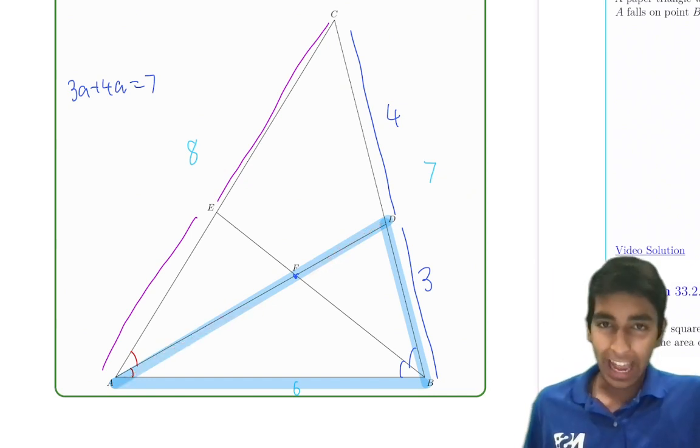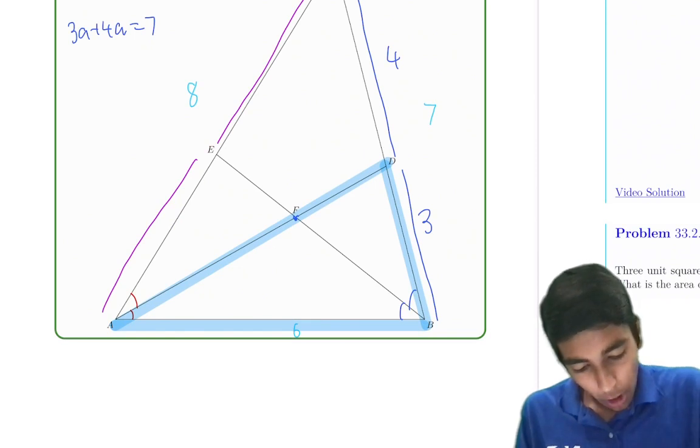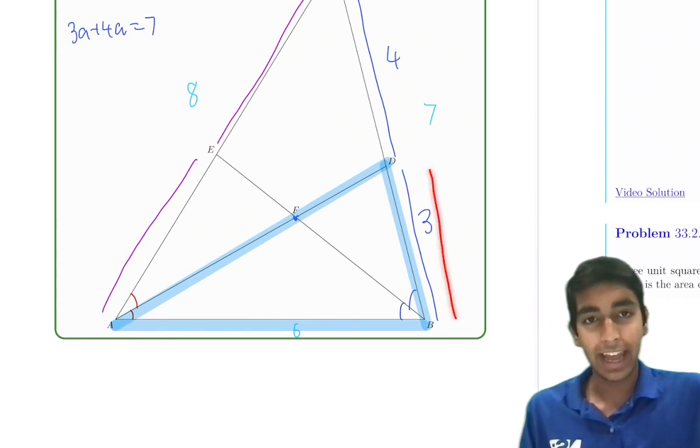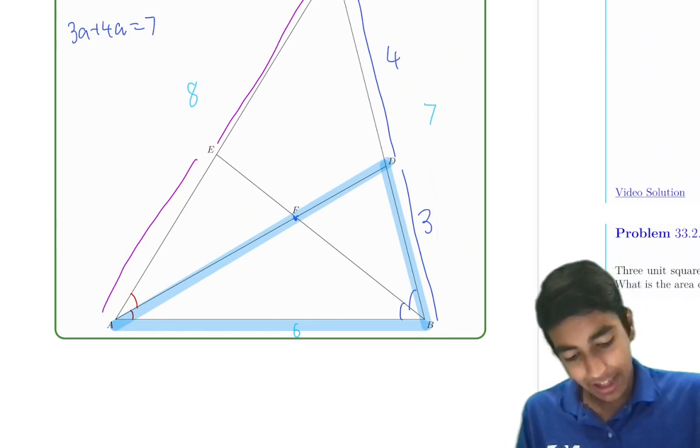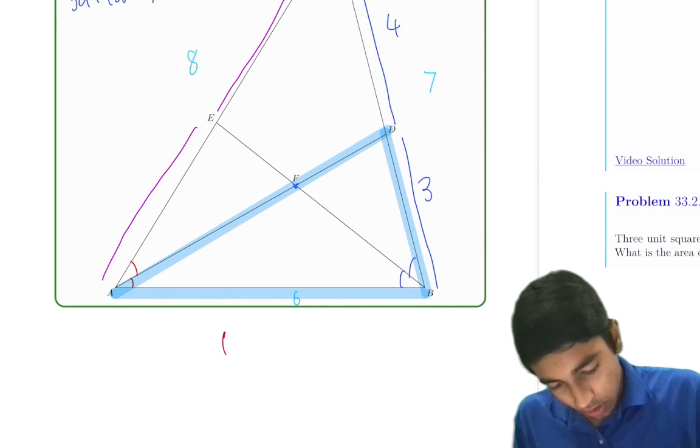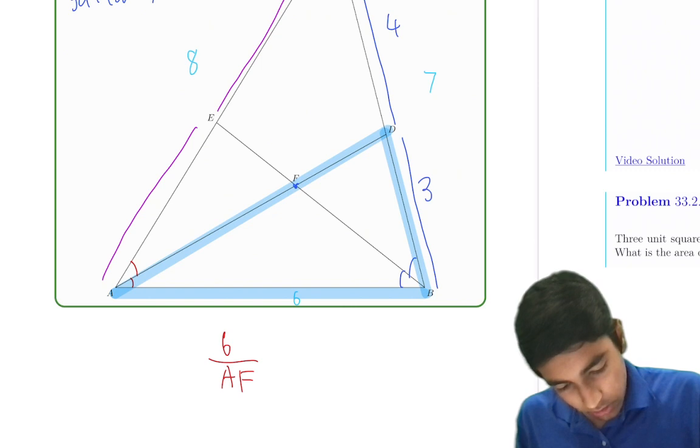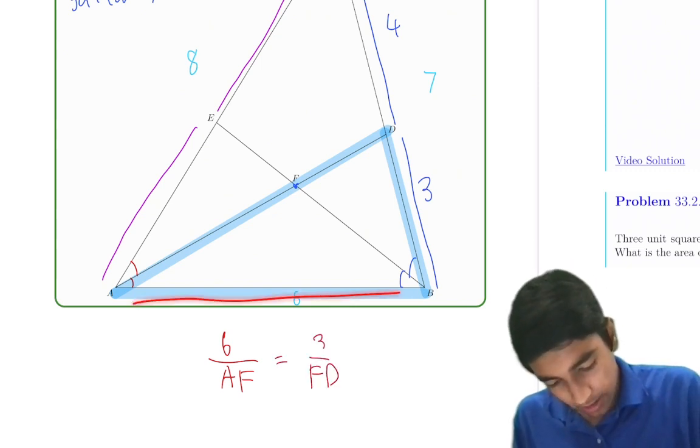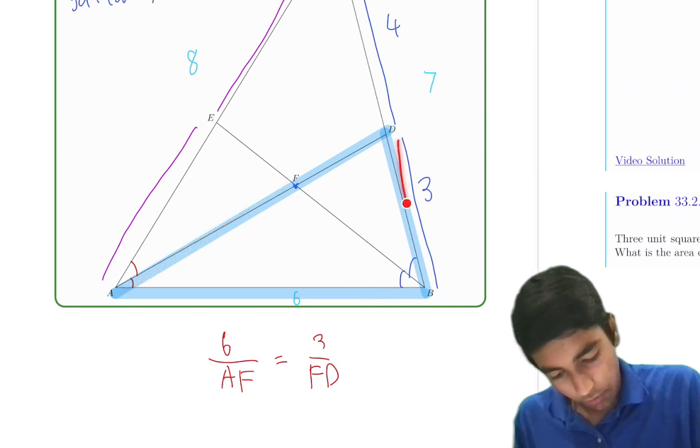If we're trying to find the ratio AF to FD, can we also use the angle bisector theorem for that? Well, yes, because we already found this to be 3 using angle bisector theorem, and this is an angle bisector. So we know that by the angle bisector theorem, 6 over AF equals 3 over FD. This over this is equal to this over this.